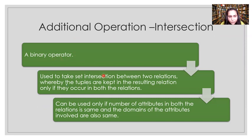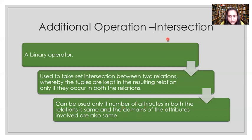Intersection requires two relations to work with, and it is used when you want to take the intersection between two relations. Tuples are kept if they occur in both relations. The condition necessary for intersection to be applied is the same condition which applies to union and set difference operations: both relations should have the same number of columns, and those columns should have the same permissible values.